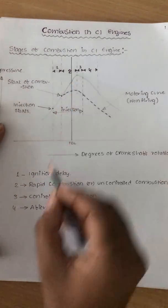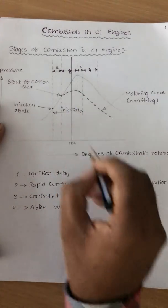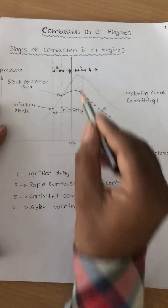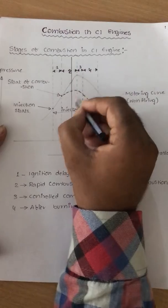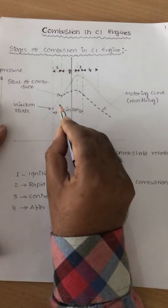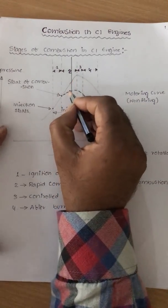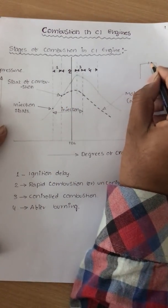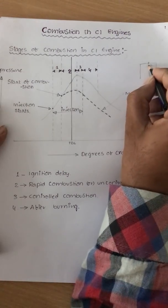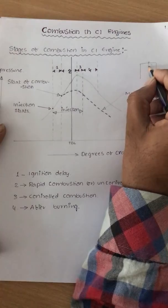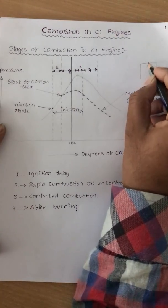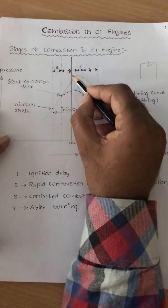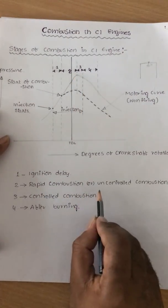The second stage is rapid combustion or uncontrolled combustion — the pressure rises very, very high, that is why we call it uncontrolled combustion. We cannot control the combustion because the fuel is injecting and at the same time combustion is continuous. The moment fuel enters into the combustion chamber, it burns because the high pressure and high temperature air takes the fuel particles and burns them. That is why the pressure and temperature are very, very high, and that is why we call it rapid combustion or uncontrolled combustion.